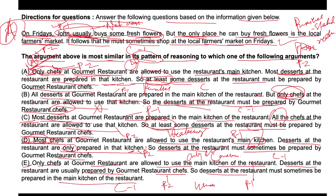Option A is correct because it points out only chefs at the gourmet restaurants are allowed to use the restaurant's main kitchen, most dishes at the restaurants are prepared in that kitchen, so at least some dishes at the restaurant must be prepared by gourmet restaurant chefs. Option A follows a similar reasoning pattern: when an exclusive condition — only certain people can do something — and a common action lead to a necessary conclusion that some of that action must be done by those people. Hence, the answer is option A. I hope you understood the question and answer. Thank you.